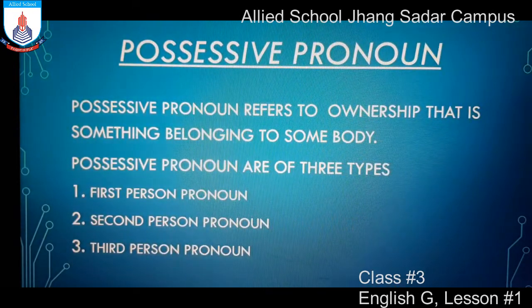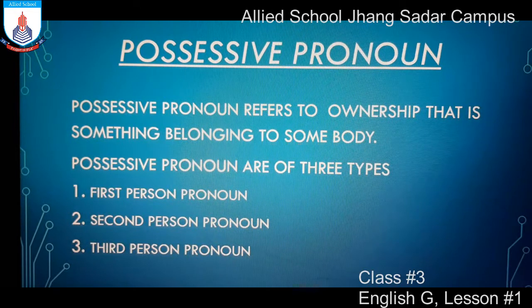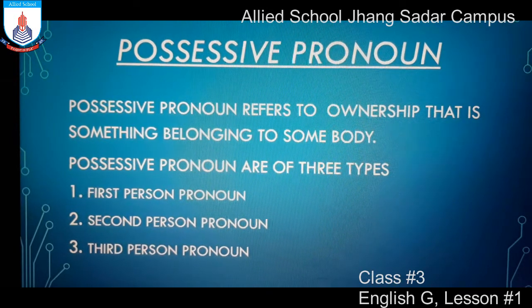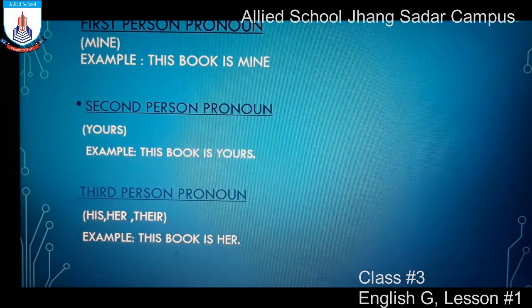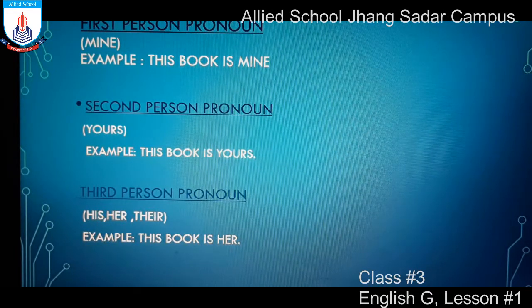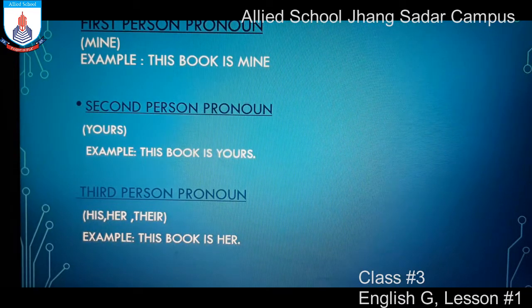Possessive pronoun refer to ownership — that is, something belonging to somebody. Possessive pronoun kisi ki milkiyat ko show karte hain. Possessive pronoun are also of three types: First Person, Second Person, and Third Person. First Person Possessive Pronoun: mine — yaani meri. Example: This book is mine — yeh kitaab meri hai. Here the word mine is the first person possessive pronoun.